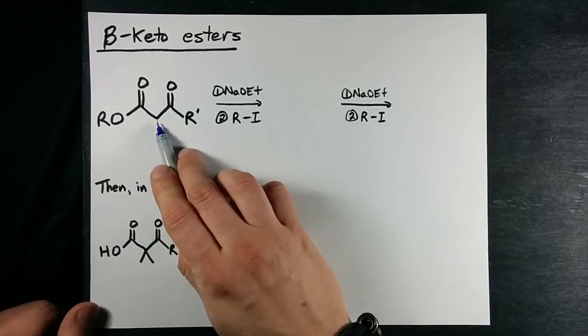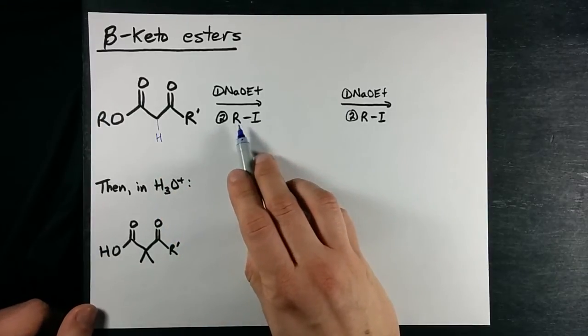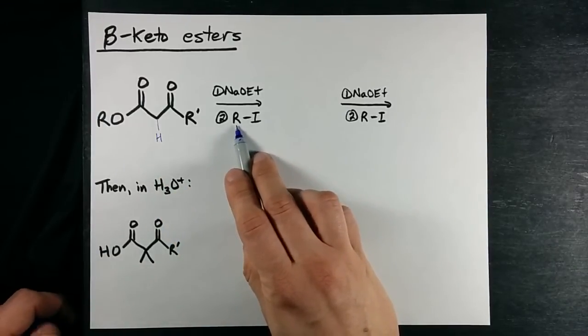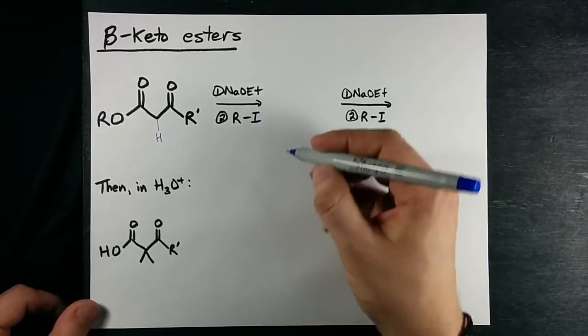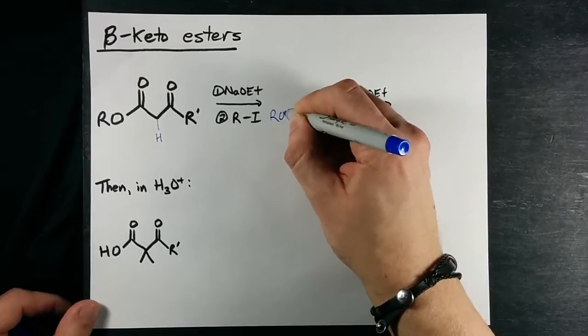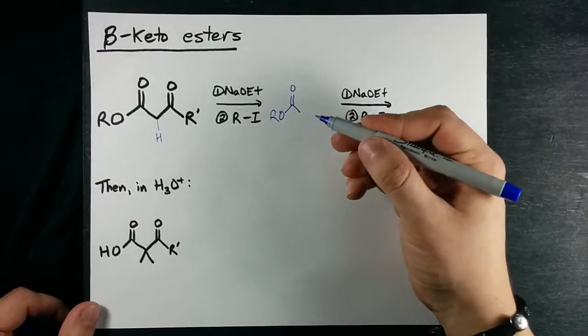It will substitute for the iodine and you'll end up with a substituted beta keto ester. If you want to see the mechanism for that, you can look at either the mechanism for an aldol condensation or an enolate alkylation, and it'll be the same thing.